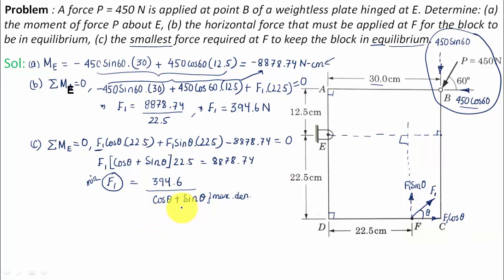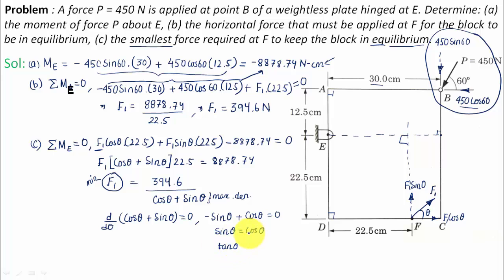Differentiating (cos theta plus sin theta) with respect to theta and setting it to zero: negative sin theta plus cos theta equals zero, so sin theta equals cos theta, which means tan theta equals 1, giving theta equals 45 degrees. Substituting theta equals 45 degrees back into the expression gives the minimum force: 394.6 divided by (cos 45 plus sin 45), which works out to 279.03 Newtons, approximately 279 Newtons.